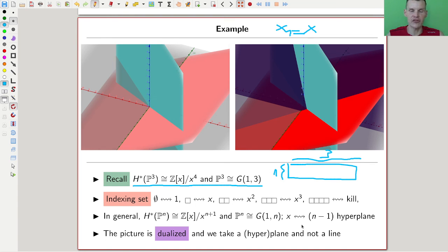And in general, this works like, in this example where k is 1, this works exactly the same way, where x always corresponds to the n minus 1 hyperplane. And you might wonder why do I take projective space, which are lines, and I end up with x being the hyperplane. The point is the cohomology ring dualizes everything, and you kind of, instead of taking the line, which is like the smallest non-trivial, you take the highest non-trivial, which is the corresponding hyperplane.